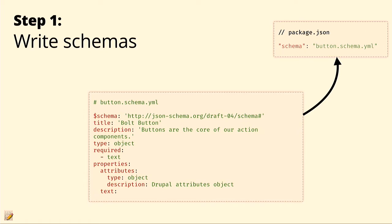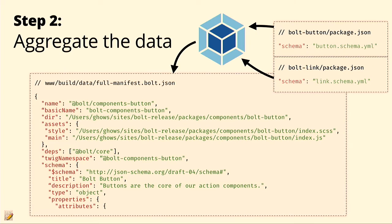You write schemas for your components, like the button component. With most systems having quite a number of different components, step two is aggregating that data to make it easy to pull all at once. You might have 30, 40, or 100 components, and constantly re-requiring that data can be troublesome for performance. So we glob it all together into one single chunk of data, and our Webpack build process does this automatically with every build. Then Twig automatically pulls in any data in a particular folder — same idea — our aggregated schema data just gets pulled into Twig globally without any extra work.